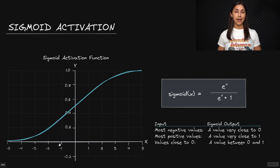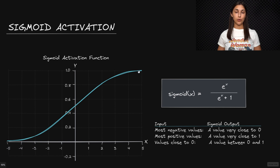When we pass values that are pretty close to zero — around this minus three to positive three range — then we will get a value that falls somewhere in the middle of zero and one, but not necessarily so close to one or so close to zero, as we do for most negative and most positive inputs.